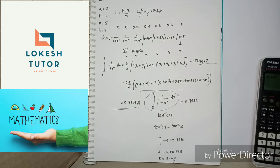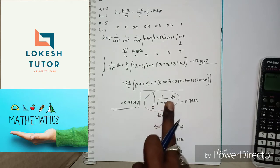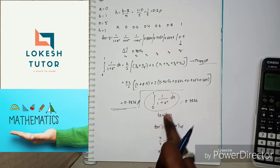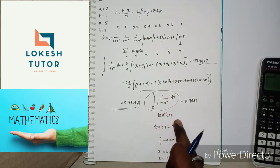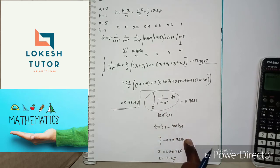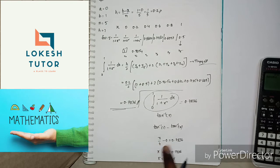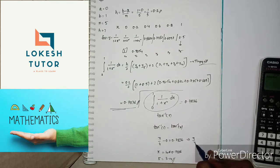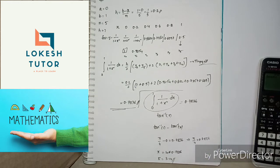For the exact integration, 1 by 1 plus x squared integrates to tan inverse of x. Applying limits: tan inverse of 1 minus tan inverse of 0, which equals pi by 4 minus 0, equals pi by 4. Pi by 4 is equal to 0.7854. If 4 is multiplied, then the pi value is 3.14.